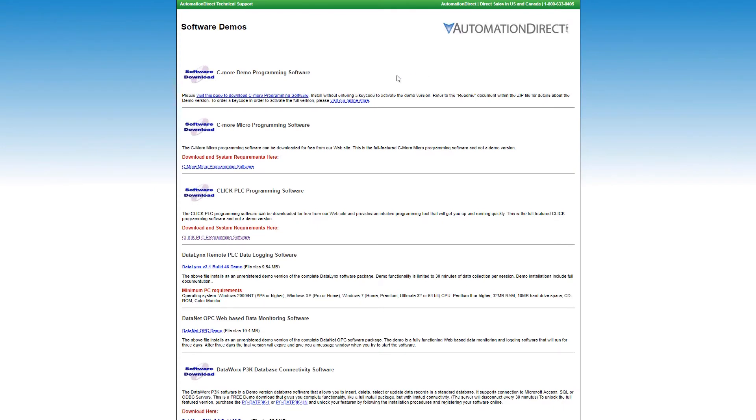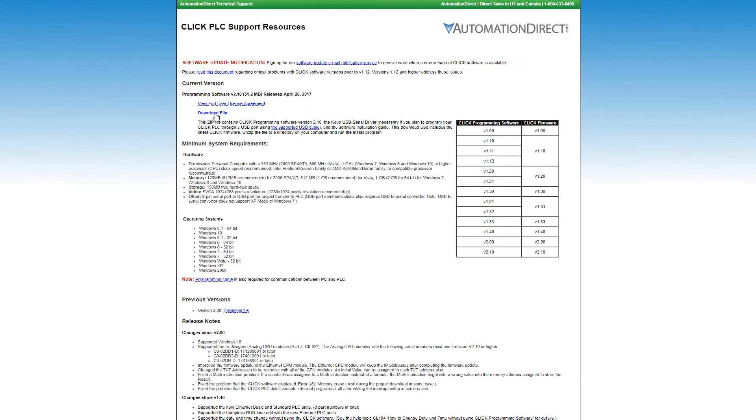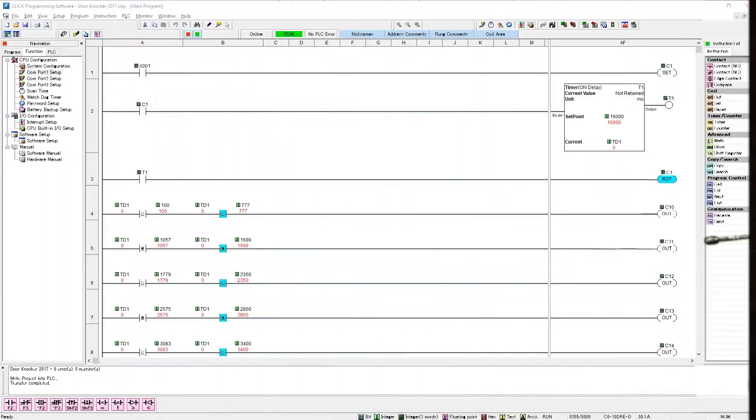Again, our Click PLC programming software can be downloaded for free from our AutomationDirect website. In this program I have the sensor on our X1 input. When it turns on I set an internal contact. This contact triggers timer T1 and when the timer equals some set values that I choose it turns on and off the outputs Y1 to Y5.